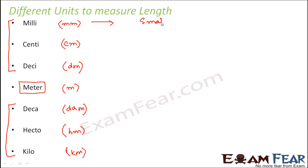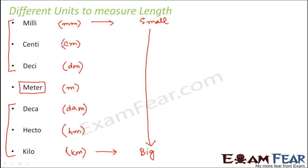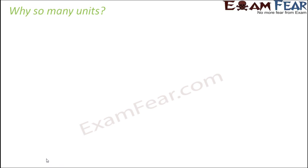If you look at these units, millimeter is the smallest unit and kilometer is the biggest. As you move down the list, the units represent more quantity. Centimeter is a bigger unit than millimeter, decimeter is bigger than centimeter, and so on. That is why it is very important to remember this sequence.